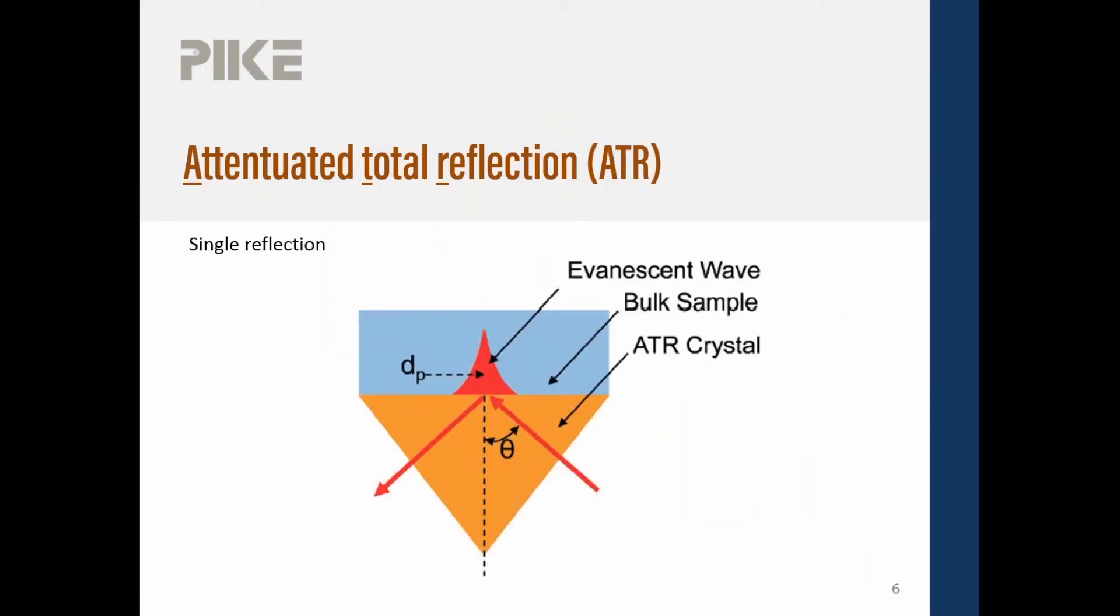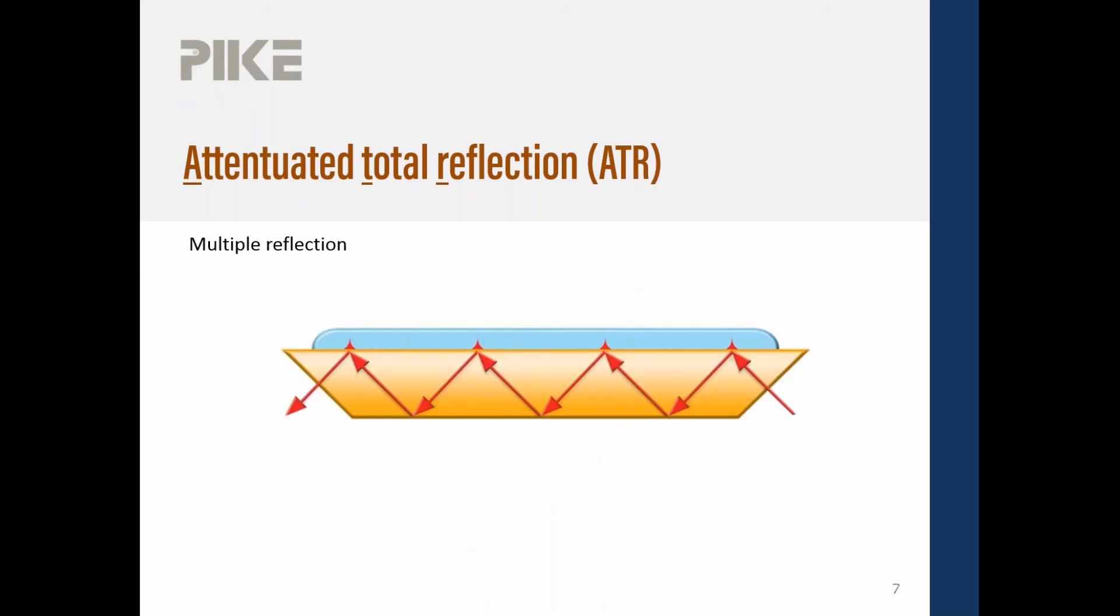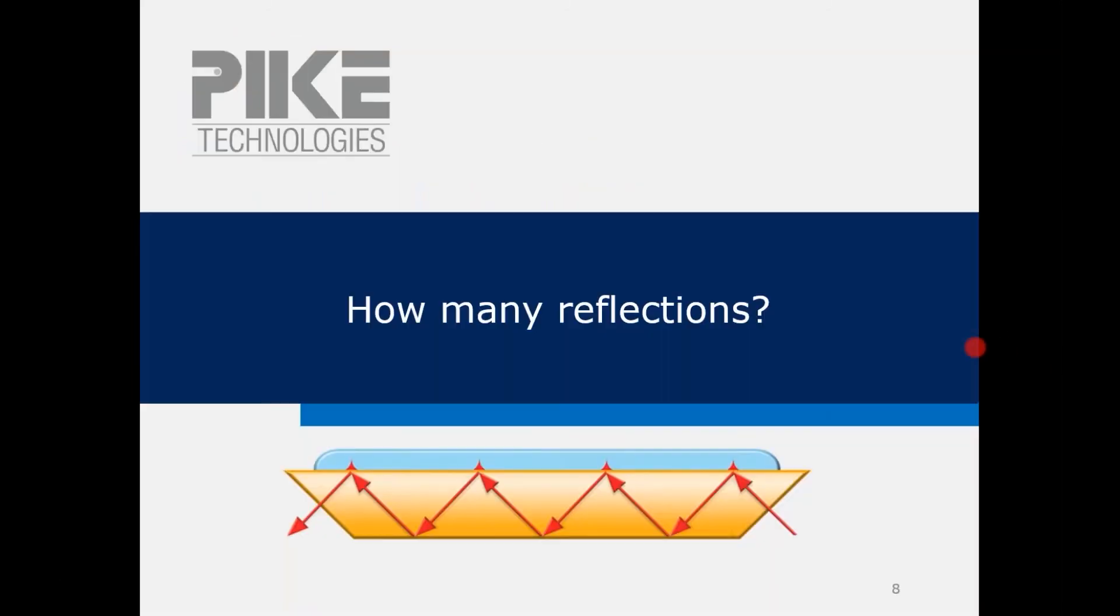All right, let's look at a little cartoon of a single reflection ATR. So the beam's coming in, it's going to create an evanescent wave, and then the beam will internally reflect. With a multiple reflection, the beam will enter and it'll bounce along the crystal, the length of the crystal, creating several different evanescent waves along the way. So here's a question. How many reflections does this multiple reflection crystal below have? Well, is it one, two, three, four, or is it one, two, three, four, five, six, seven?